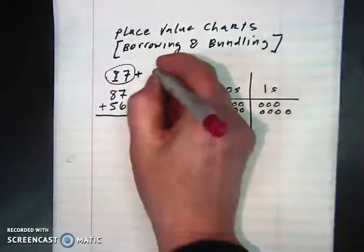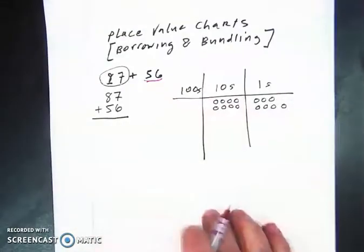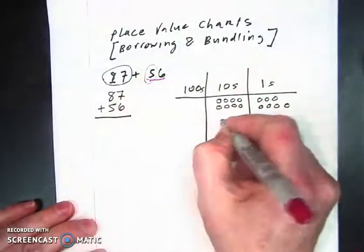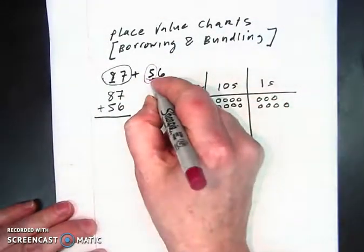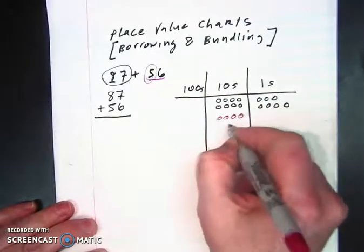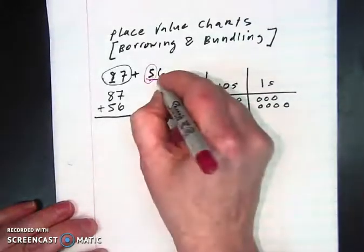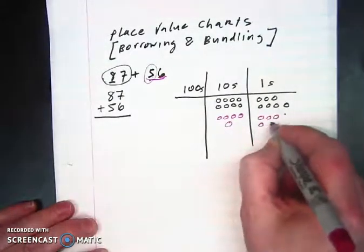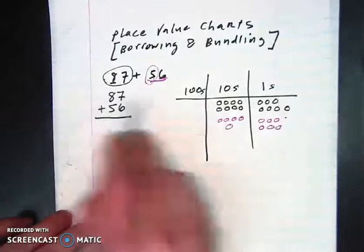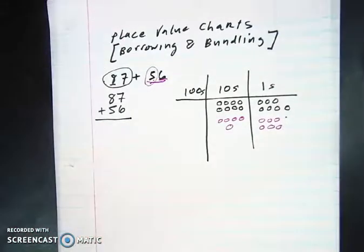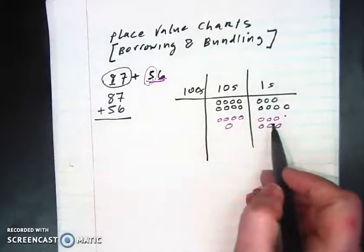Now we're going to add our 56. So now we're going to populate our placement chart with 5 10s, which is pretty much just 50, and 6 1s. So 1, 2, 3, 4, 5, 6. So now we've added these together. So now you can see them all. But as soon as you have more than 9 of anything, it becomes a 10.